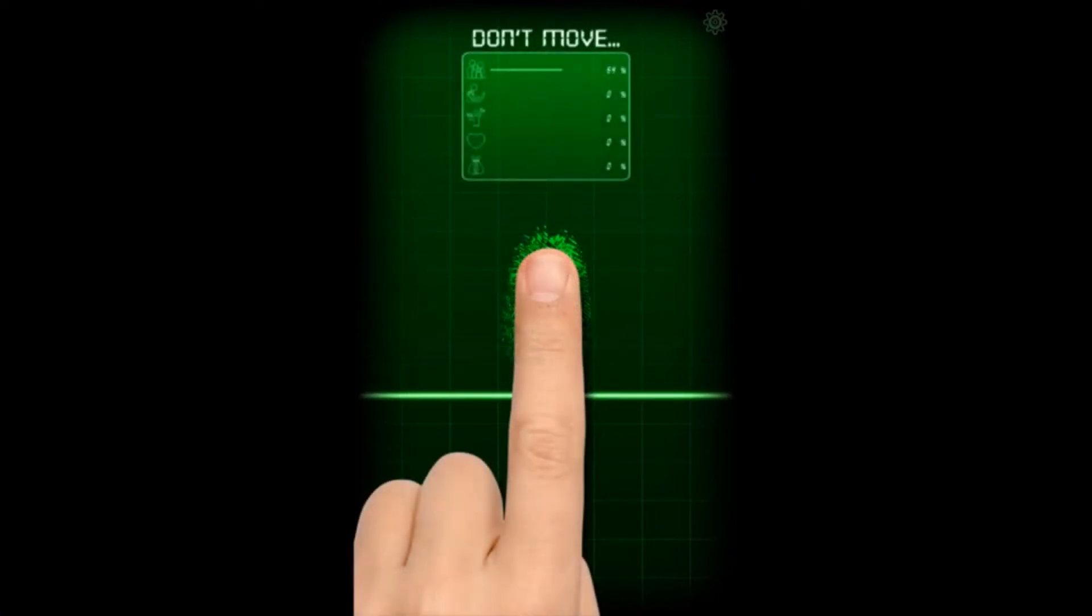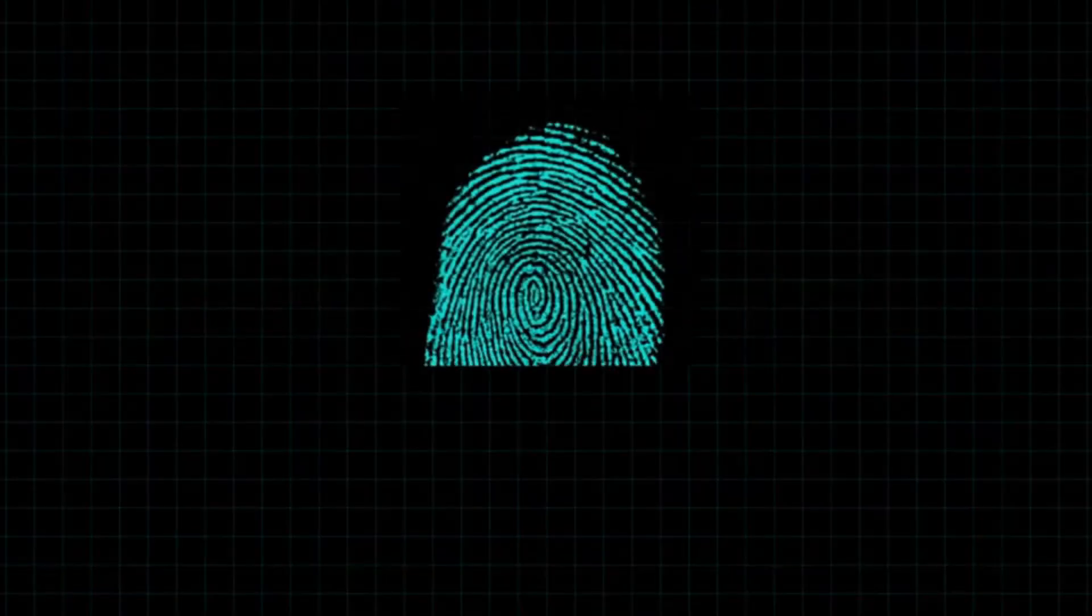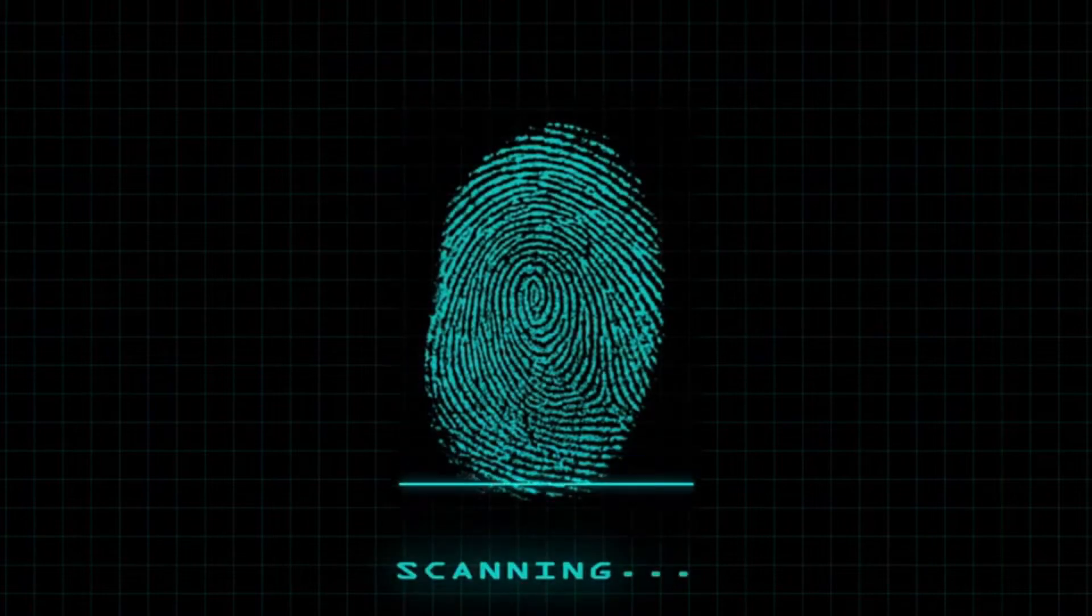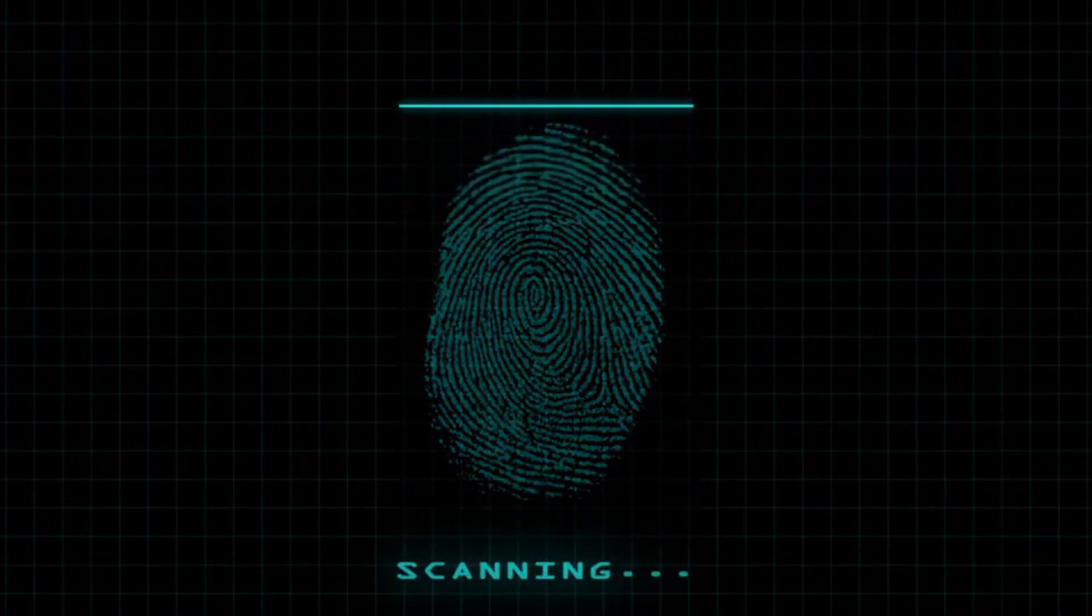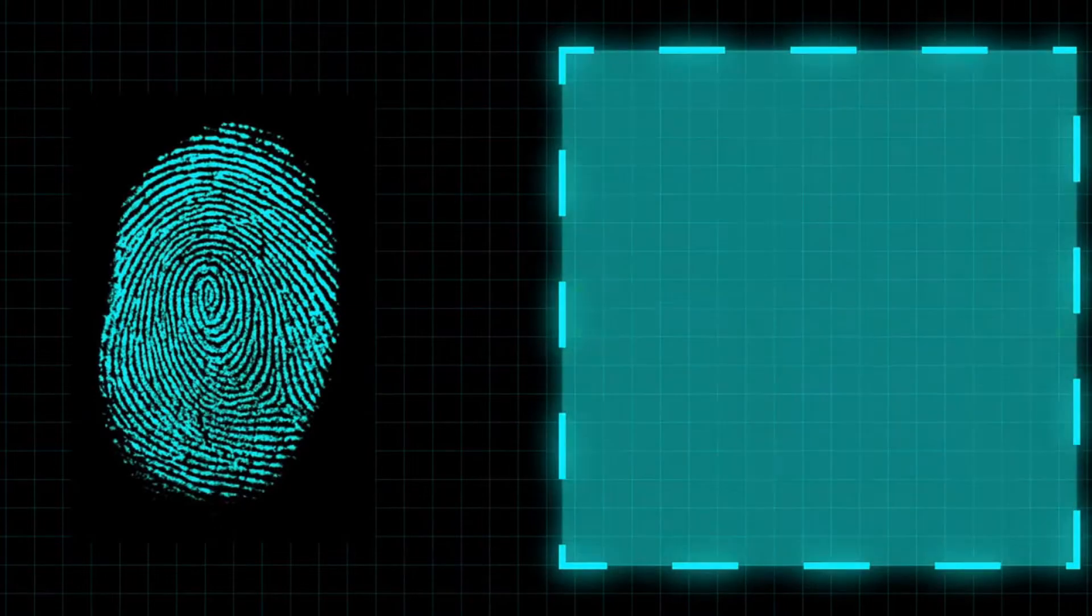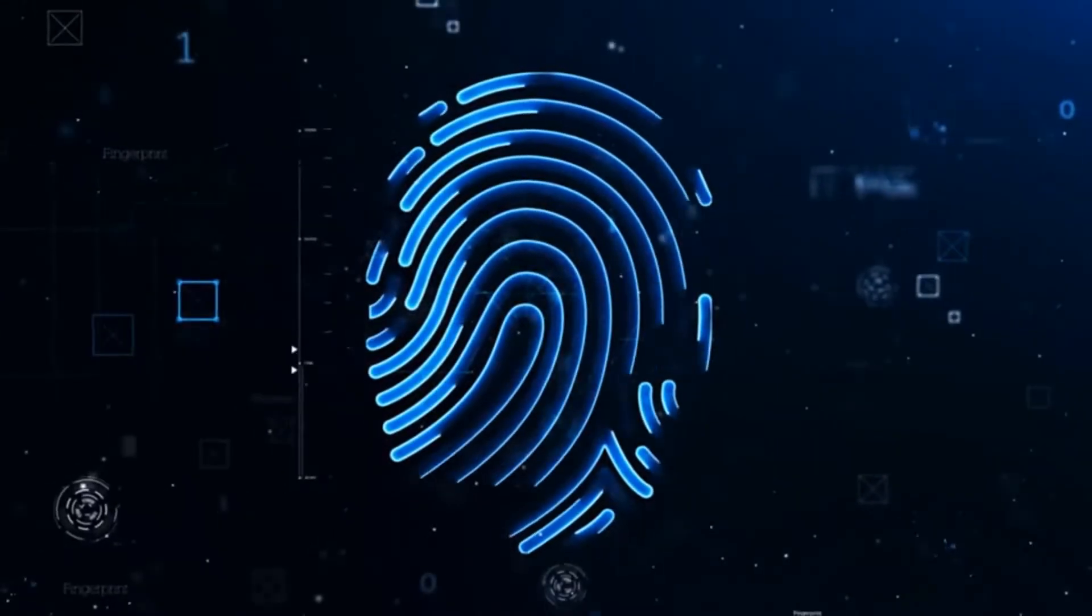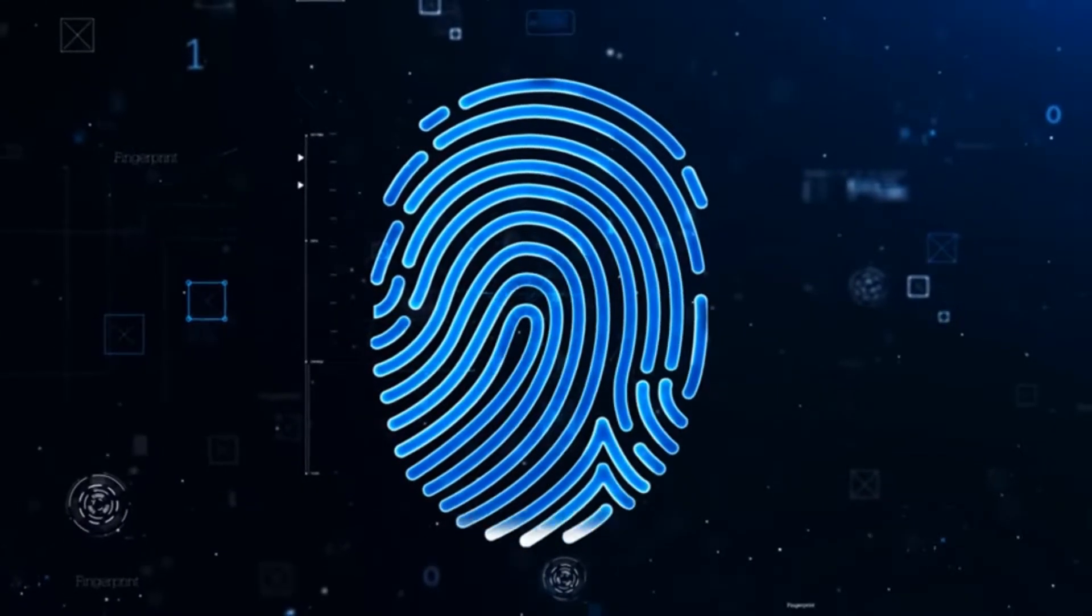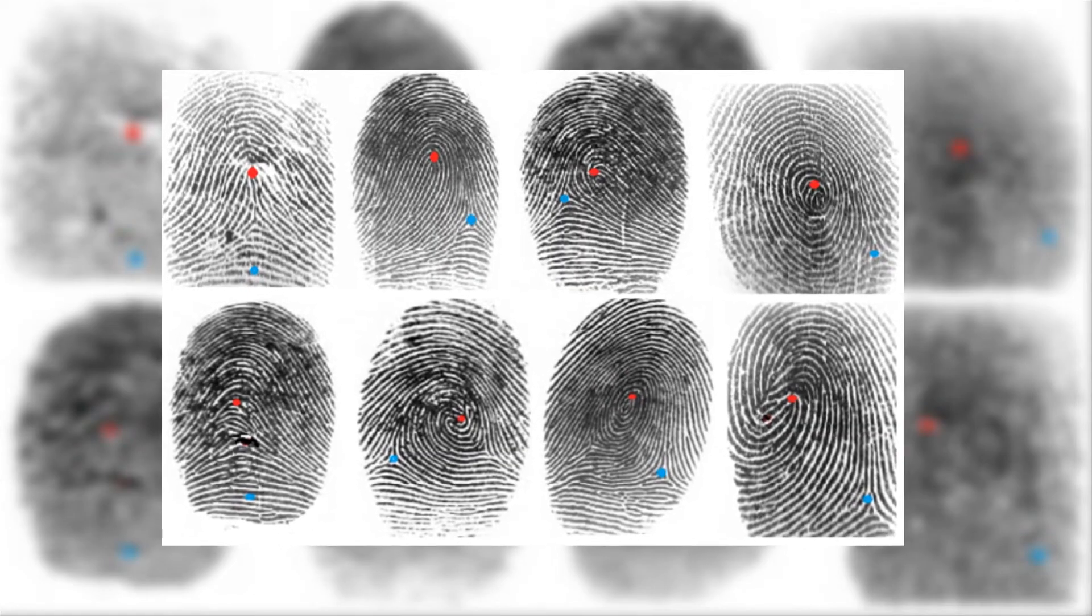What is a fingerprint? A fingerprint is an impression made by the papillary ridges on the ends of the fingers and thumbs. Fingerprints afford an infallible means of personal identification because the ridge arrangement on every finger of every human being is unique and does not alter with growth or age. Although every fingerprint is different, they're all variations on three broad categories.